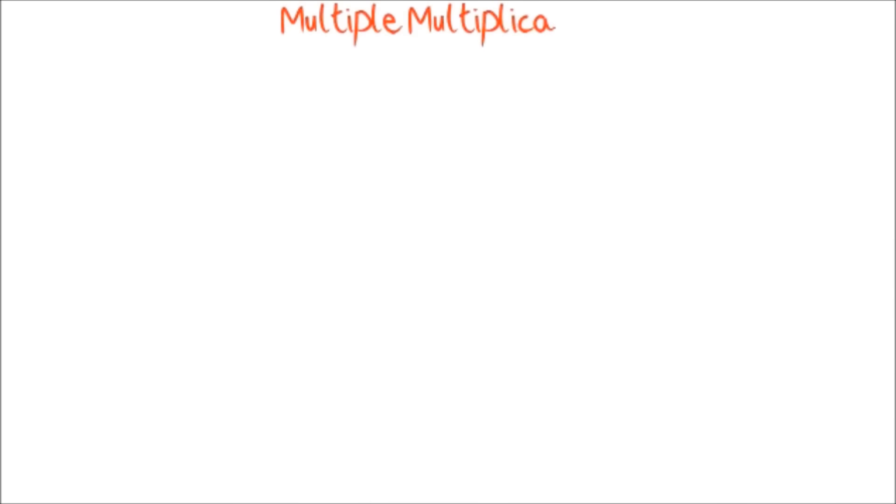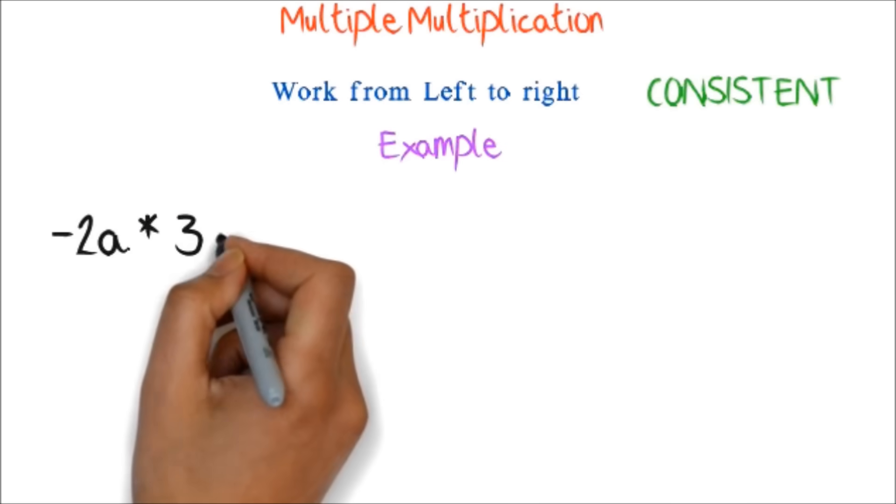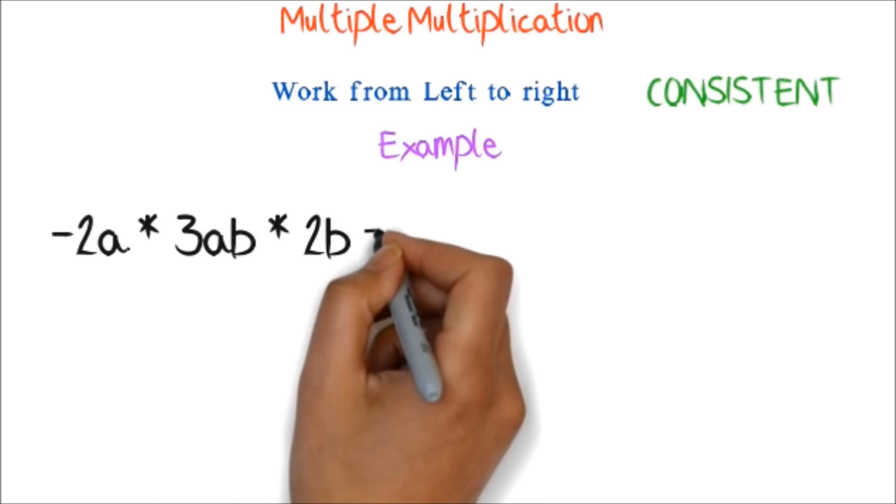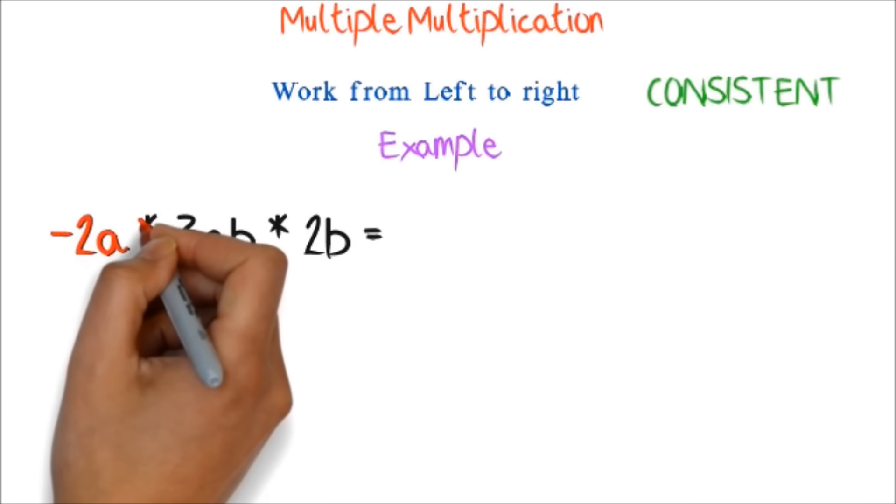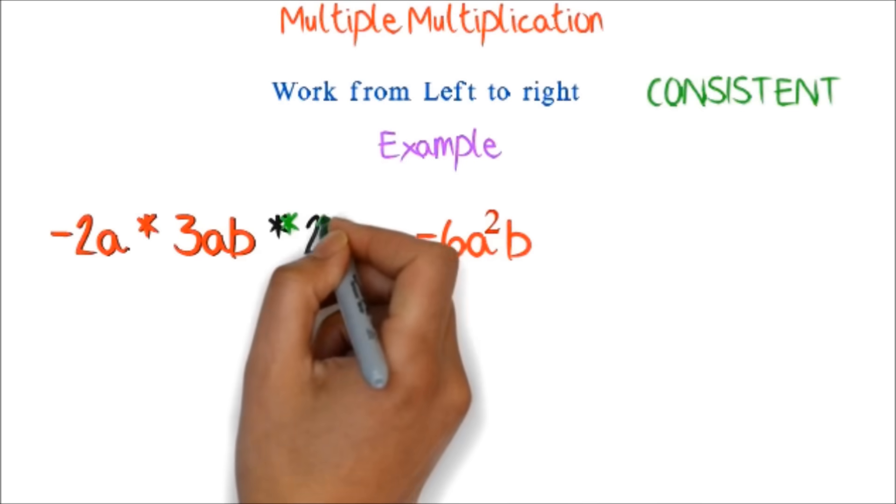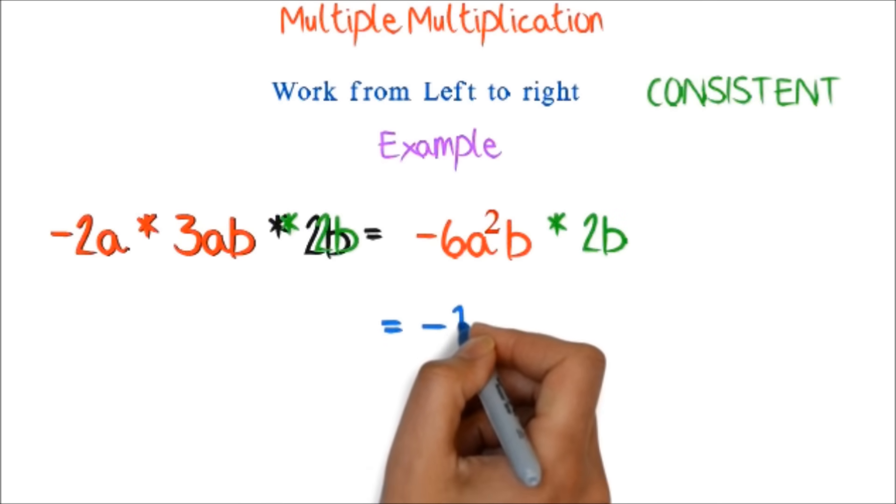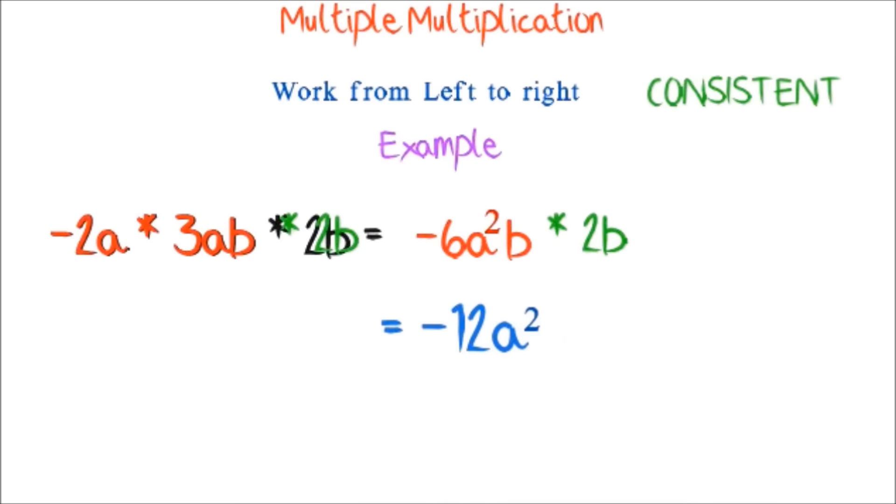When dealing with a lot of multiplications, please work on them from left to right. This is not a mathematical requirement. This will just make it consistent with operations like division and subtraction that require that order. Example, negative 2a times 3ab times 2b. Here, we will do the negative 2a times 3ab first to get negative 6a squared b. Then, we will multiply this by the 2b to get negative 12a squared b squared.